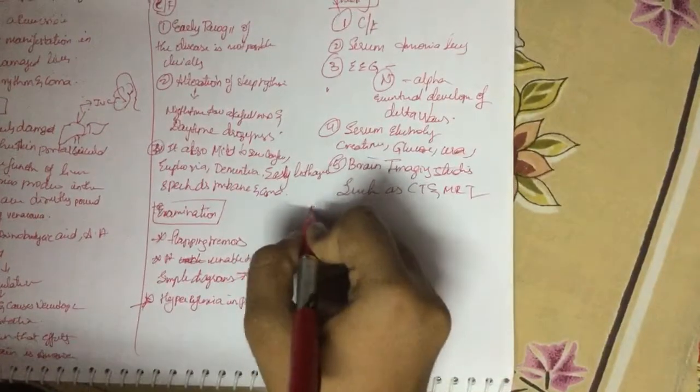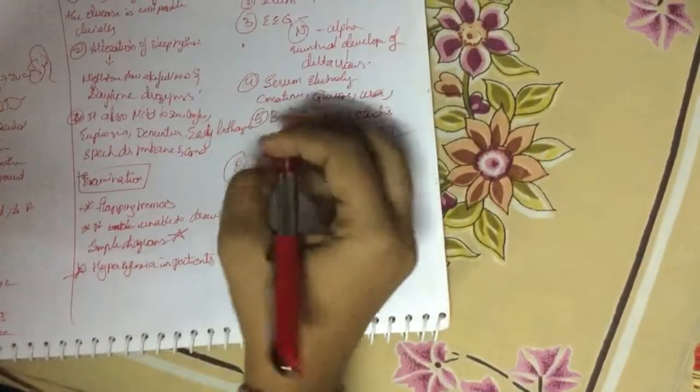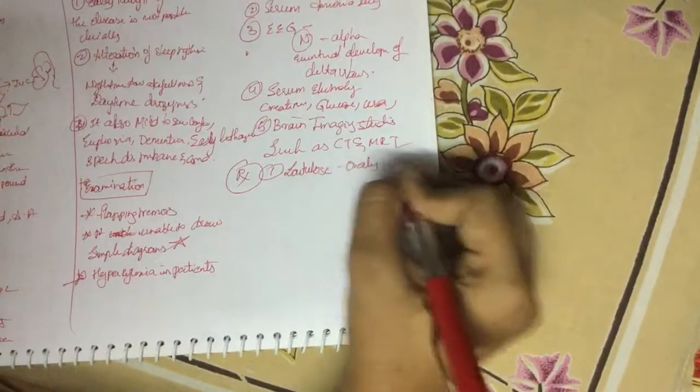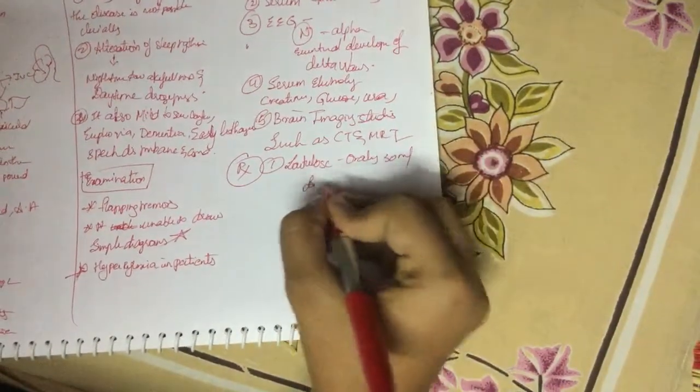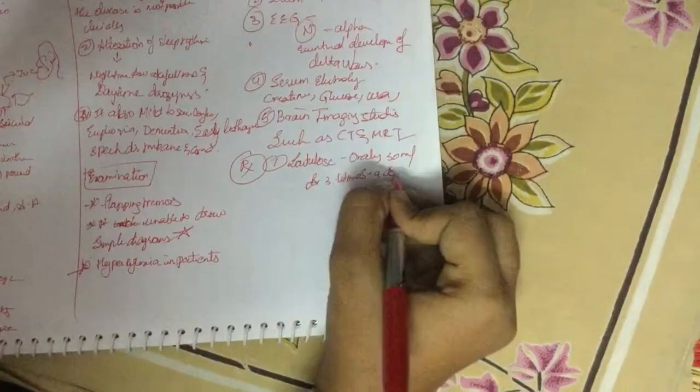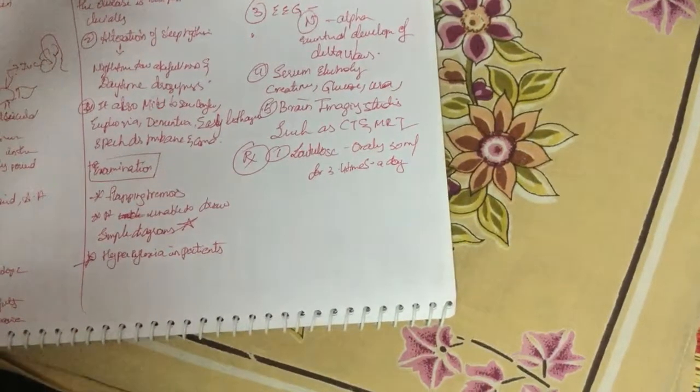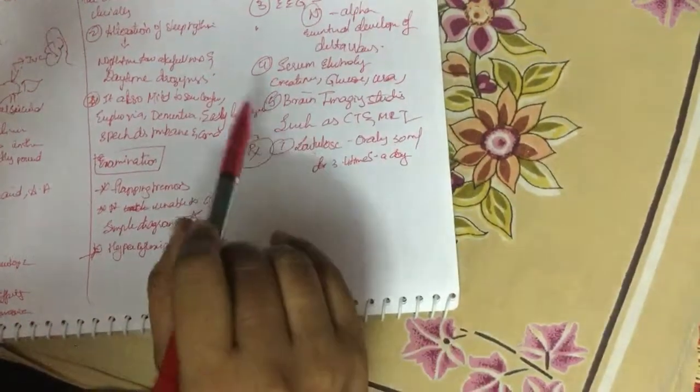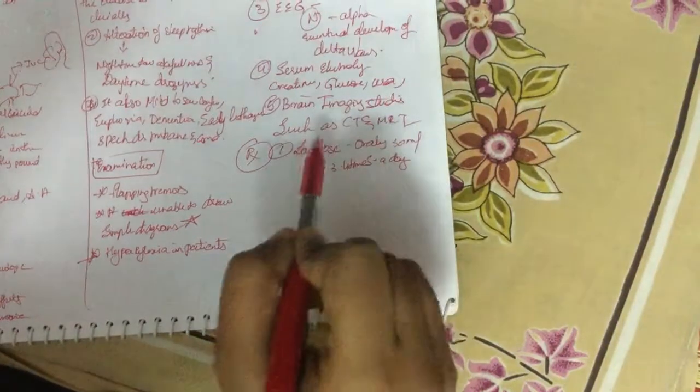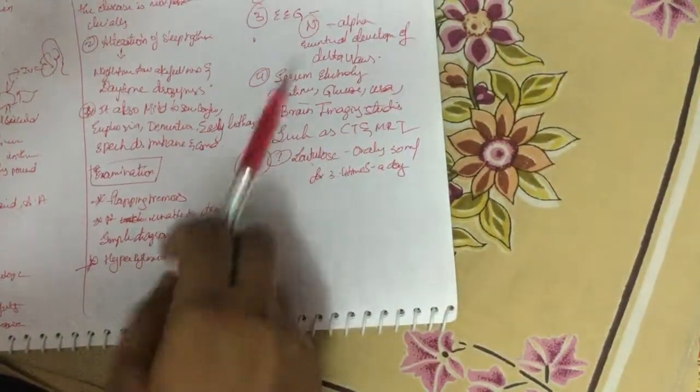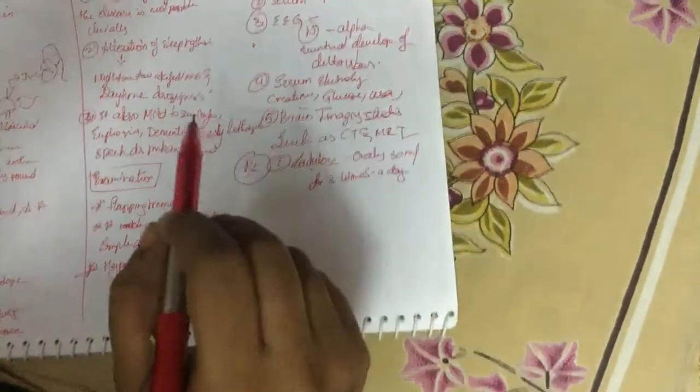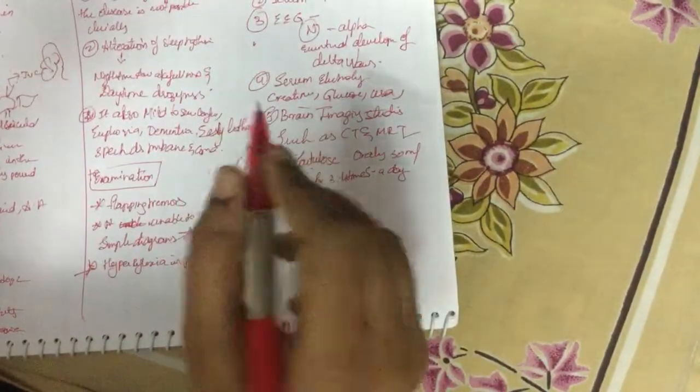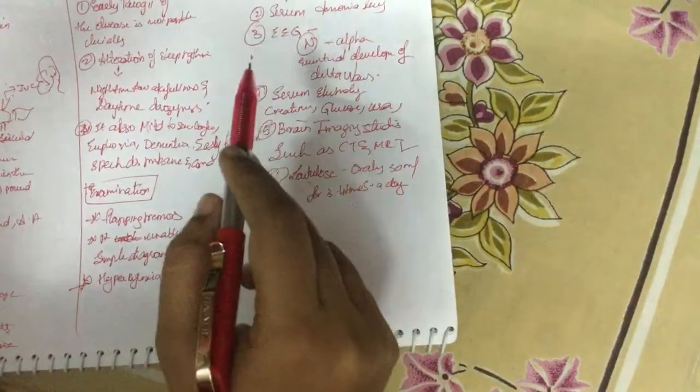Treatment includes lactulose given orally 30 ml three to four times a day. The dose should be titrated so that two to three soft stools per day are produced. Lactulose is a non-absorbable synthetic disaccharide. It is digested by bacteria in the colon into short-chain fatty acids, resulting in acidification of colon contents. This acidification favors formation of ammonium ion from ammonia. Ammonium ion is not absorbed and is excreted in the stool. Lactulose also inhibits intestinal bacteria by formation of acidic environment. Lactulose can be given rectally in retention enema.